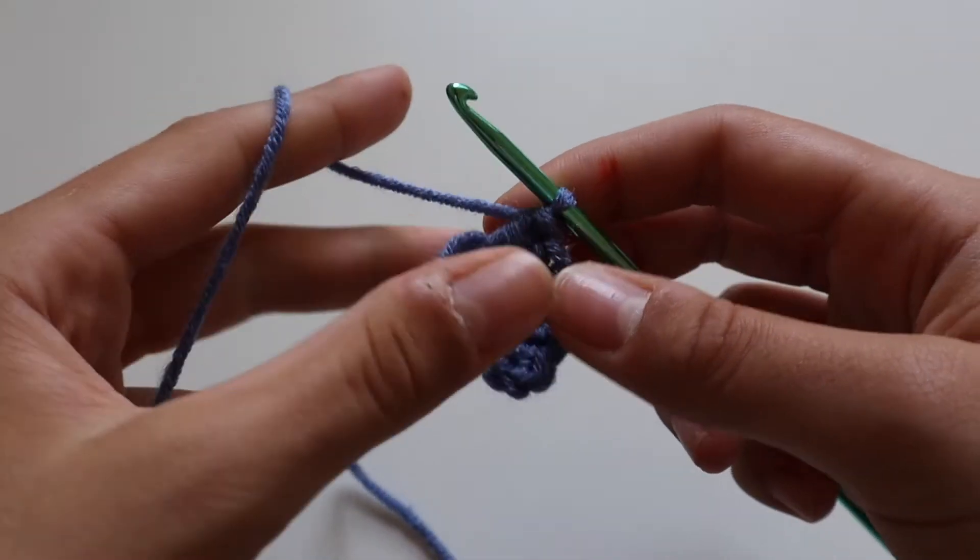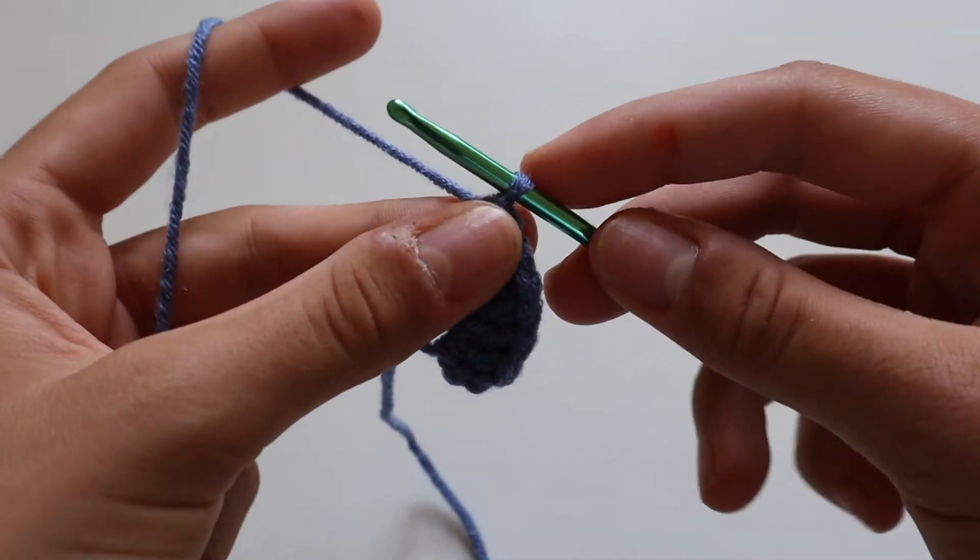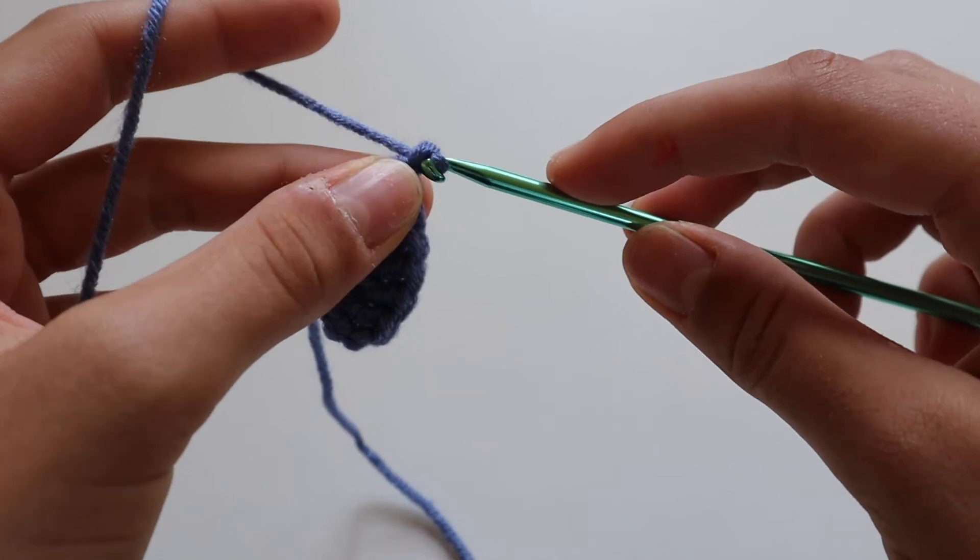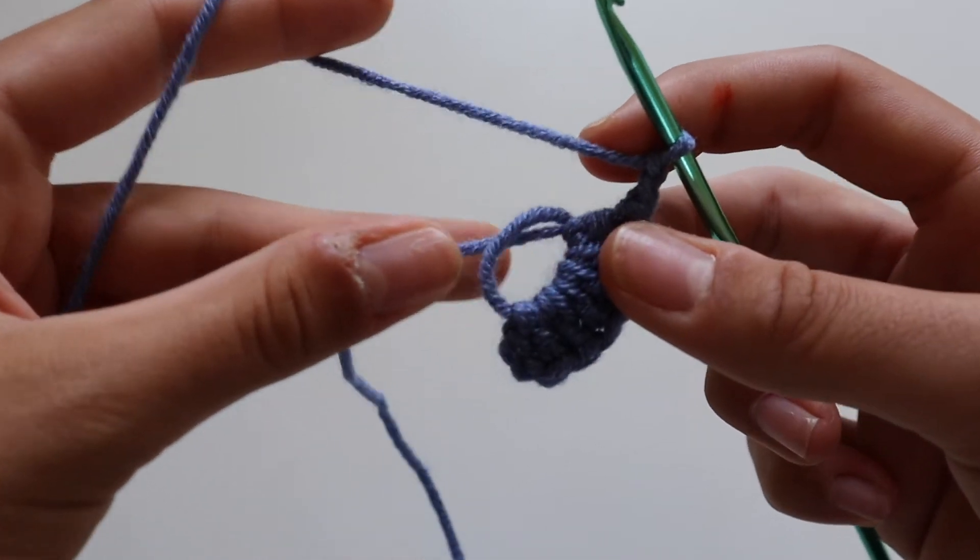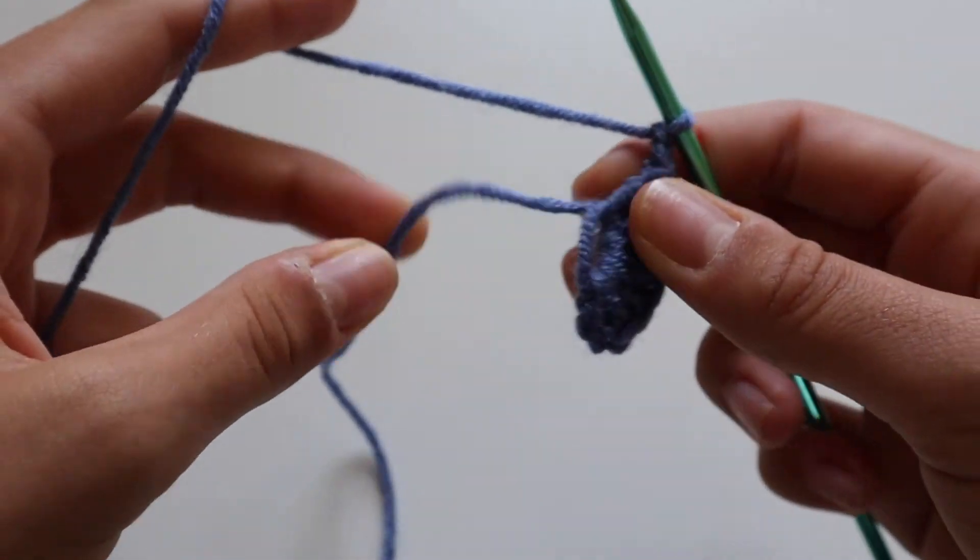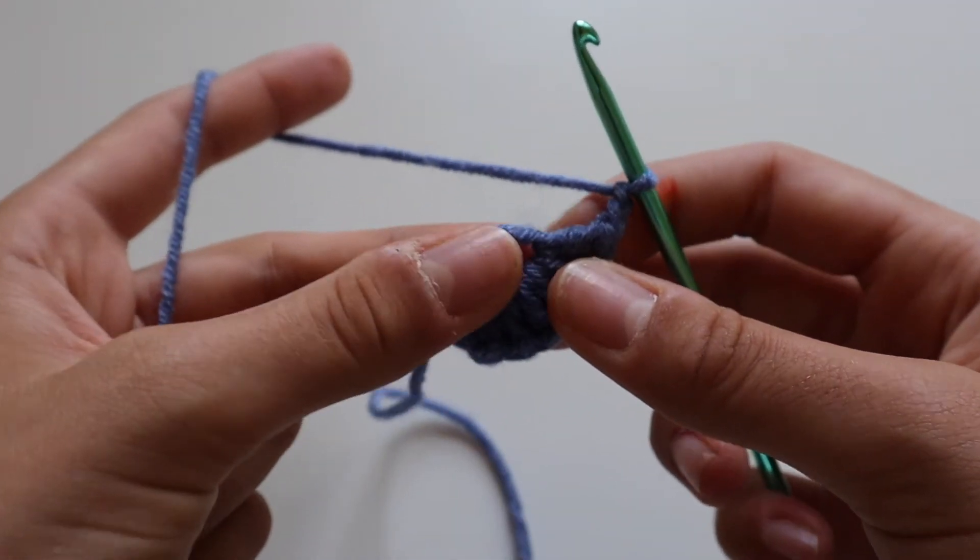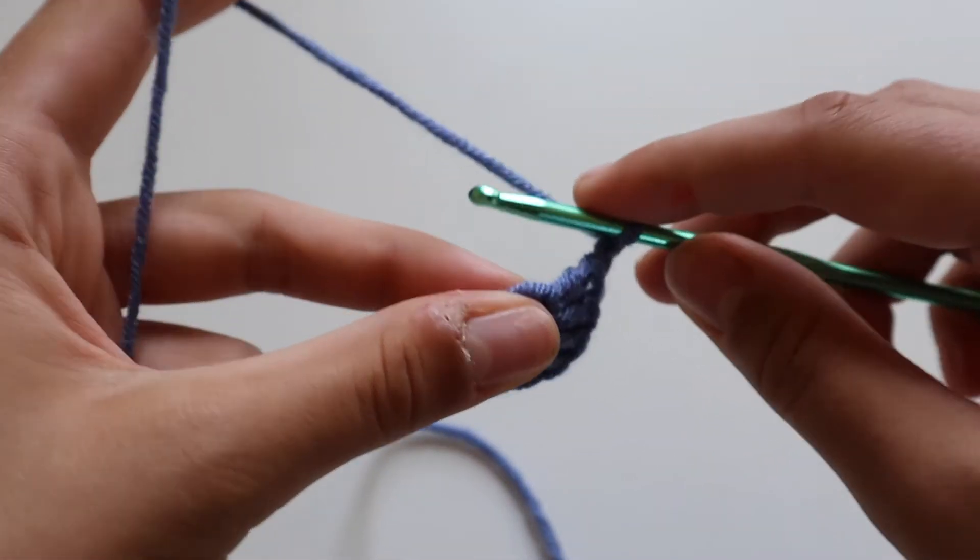And then we're gonna make the peak of our heart, so the bottom, and all you're gonna do for that is chain two, like so. And then exactly into the same loop, into our magic circle loop, we're gonna work another seven treble crochets.